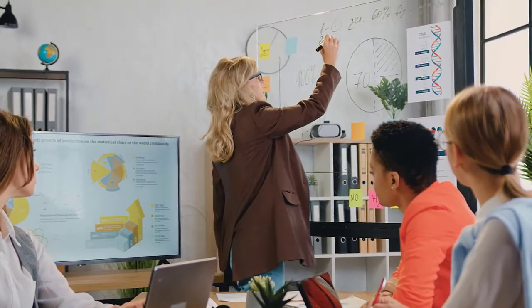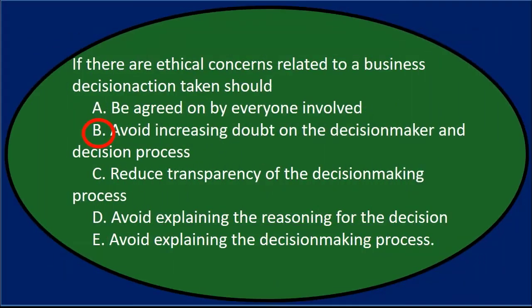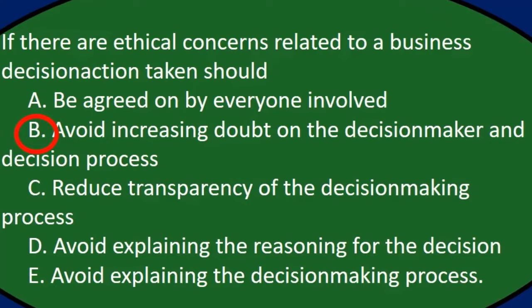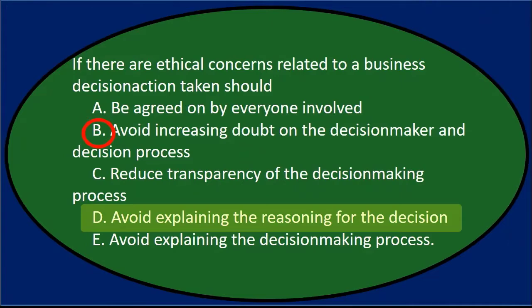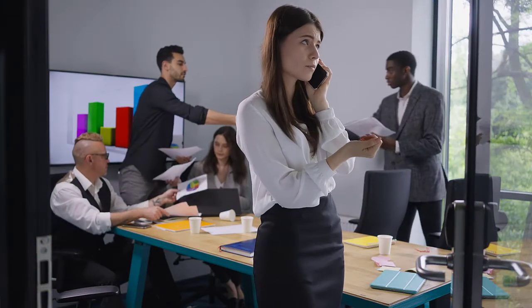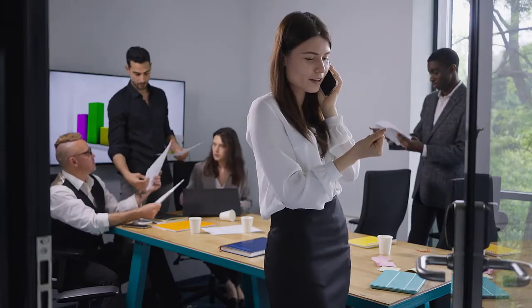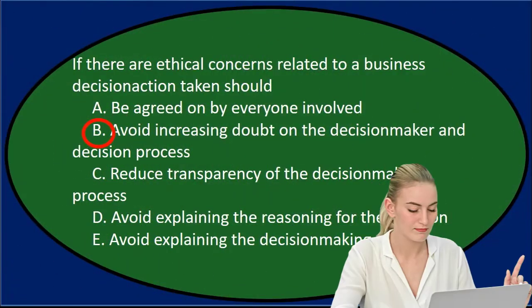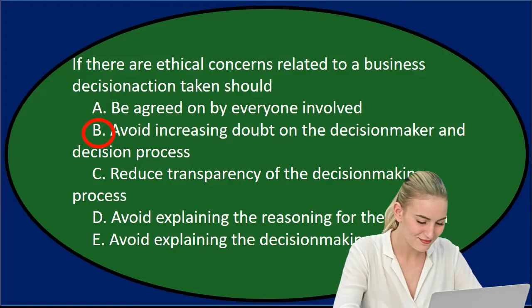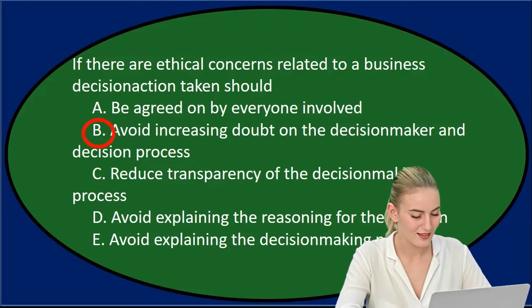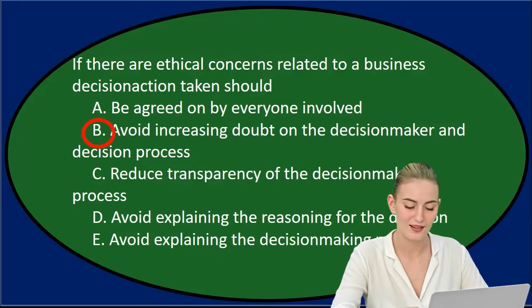People may not always agree with a decision that is made, but if people feel the process is fair and done well, then even if they don't agree with the ultimate decision, they're often able to accept it and think it's fair depending on the process. So we typically want to show that process and how it's formalized. D — avoid explaining the reasoning — is also reducing transparency, and what we really want to do is increase transparency and explain the reasoning in a fair, impartial, and uniform manner.